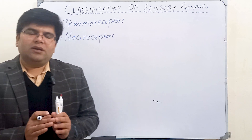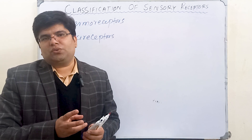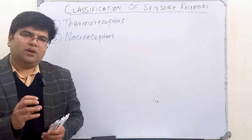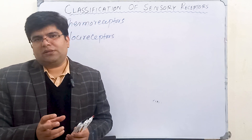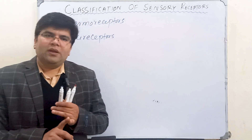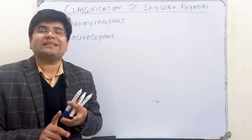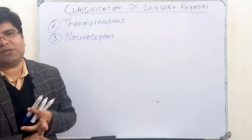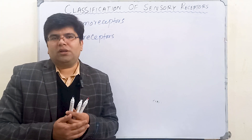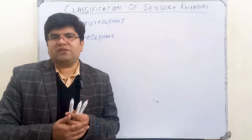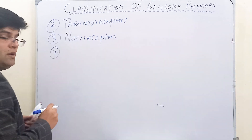Nociceptors are receptors for pain. Pain is a sensation detected when there is damage in the tissue, which may be due to physical, chemical, or thermal stimulus. So we have mechanical nociceptors, thermal nociceptors, chemically sensitive nociceptors, and also polymodal nociceptors which are stimulated by different types of noxious or damaging stimuli.